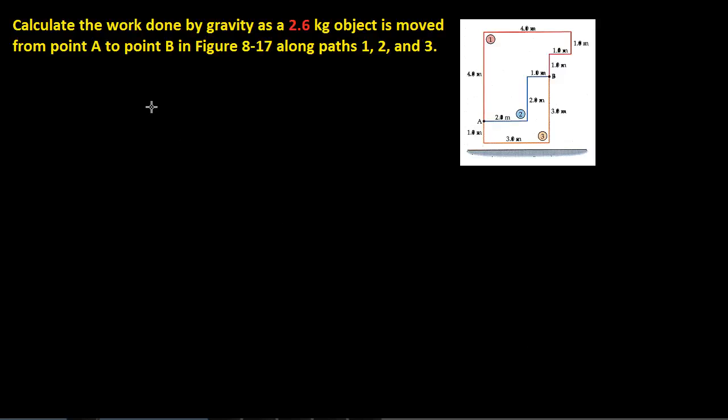Hello. So we have a problem where things are moving from one location, or things are taking different paths from one location to another. The problem says: calculate the work done by gravity as a 2.6 kilogram object is moved from point A to point B in this figure along paths 1, 2, and 3.